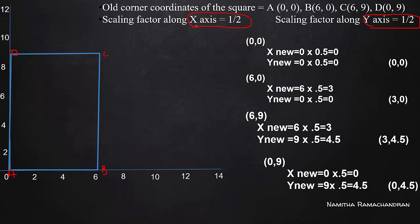The scaling factor along the x-axis is half and along the y-axis is half — the same scaling factor of half. Shrinking occurs when the scaling factor is less than 1. So this is a size reduction. The x-scaling factor equals the y-scaling factor equals half, so the reduction is equal to half.